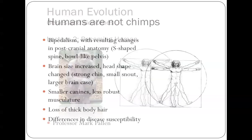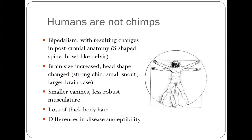Let's go back to where we were in the previous lecture, just to reaffirm that we're not chimps. We differ from chimps in all these different morphological and behavioural characteristics, but what we're here to talk about today is what can the genome tell us about how we stopped being chimps and became something else.